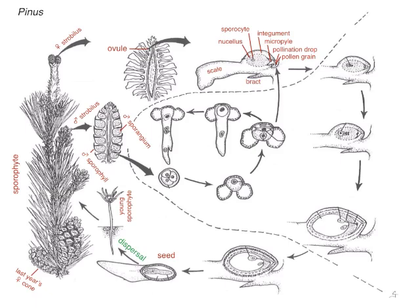Let's go back to a tree, and this time we'll focus on the male strobili. The male strobili consists of a series of microsporophylls, and those microsporophylls have microsporangia on them. Each microsporangium has lots and lots of microsporocytes in them, and those microsporocytes undergo meiosis and make microspores. The microspores grow up to be microgametophytes, and the microgametophytes we call pollen grains. So a pollen grain is the same as a microgametophyte.